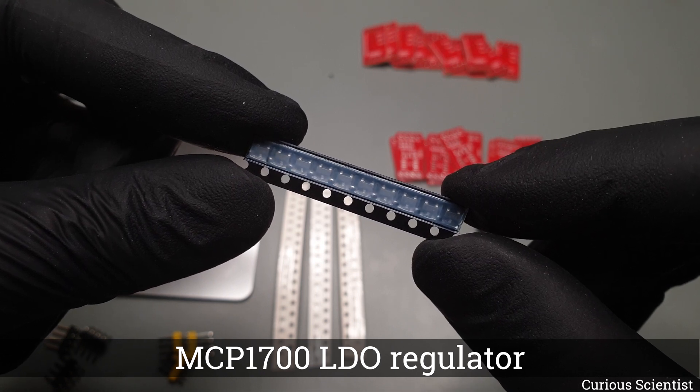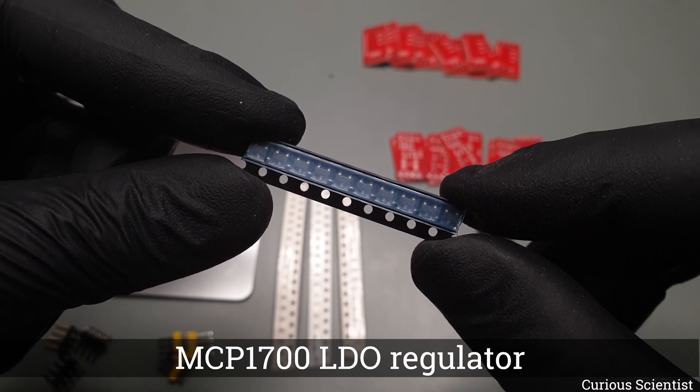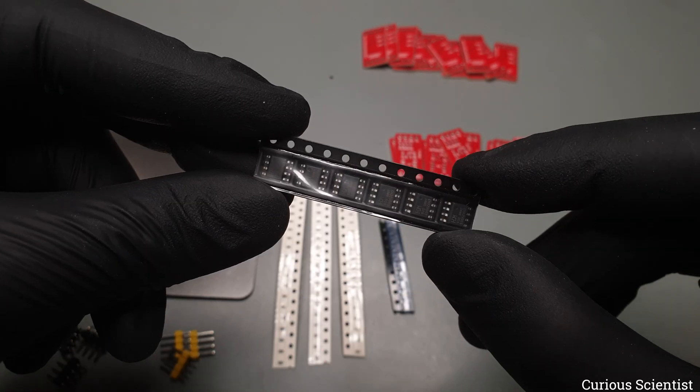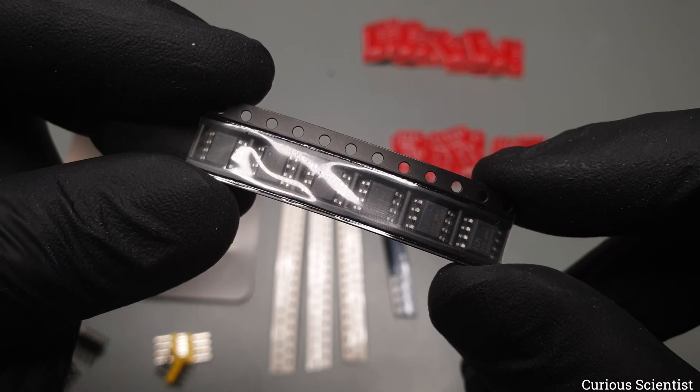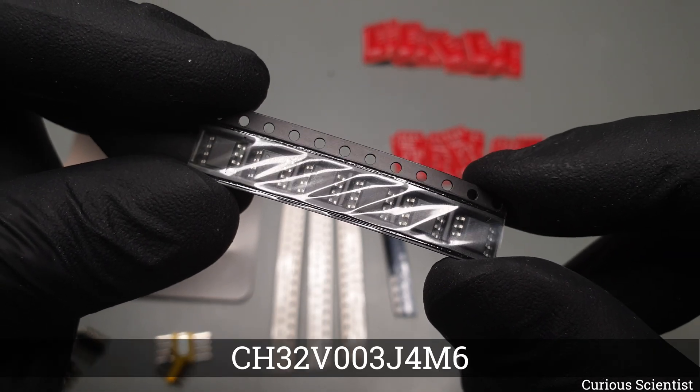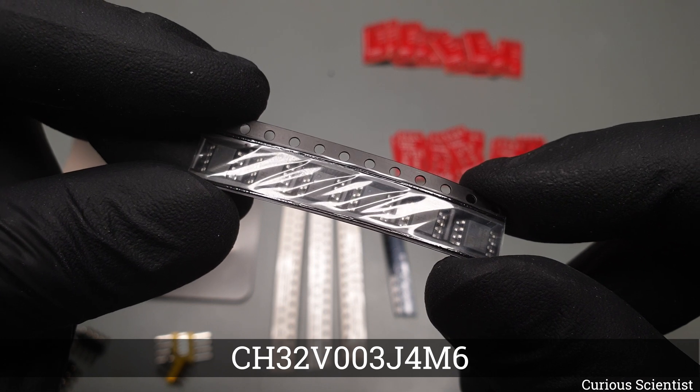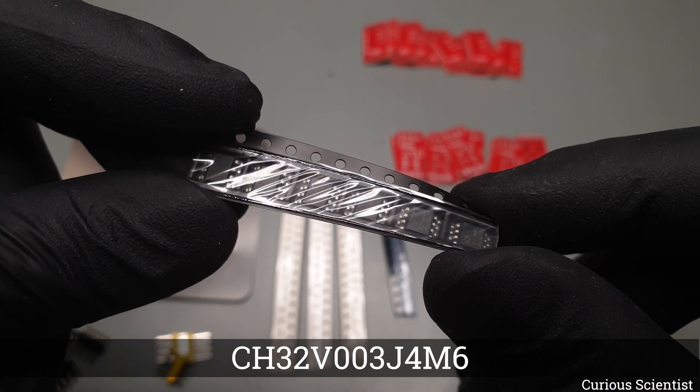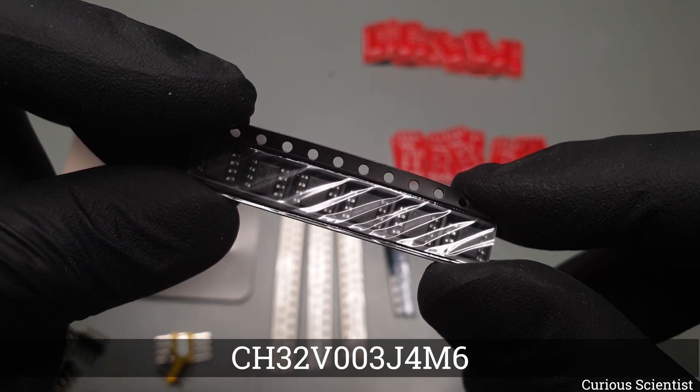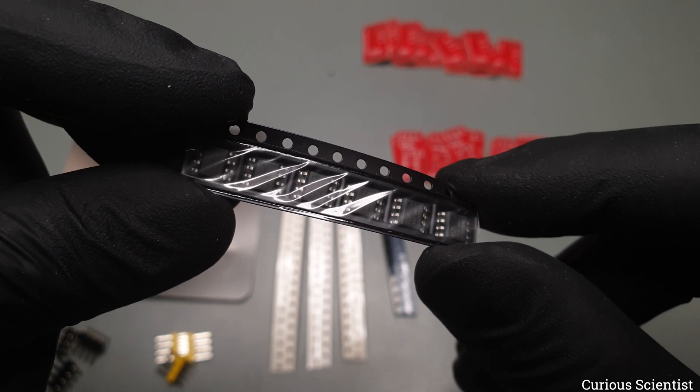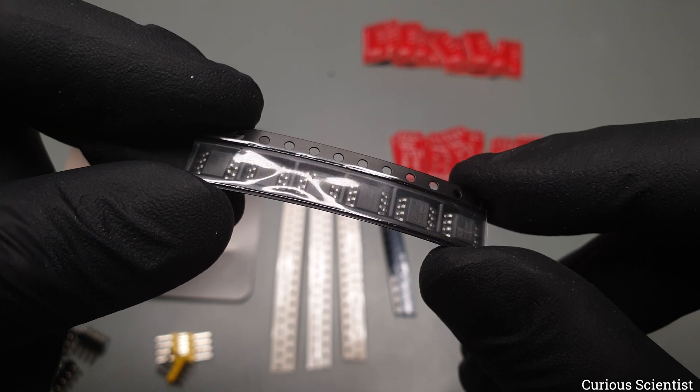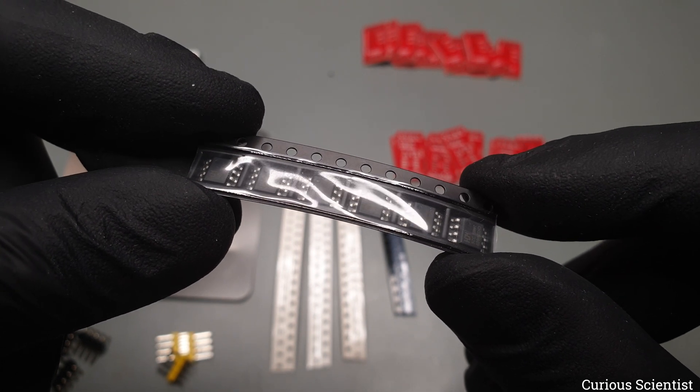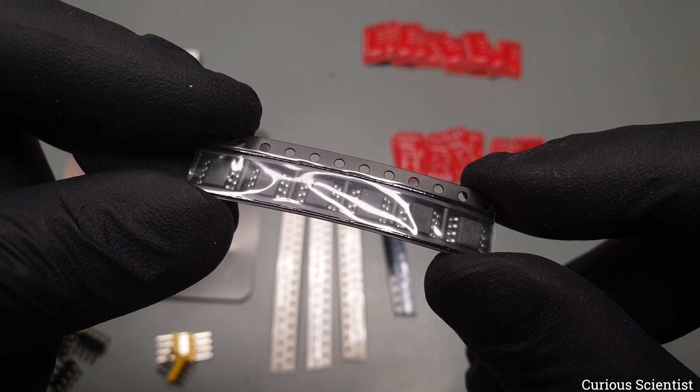The microcontroller that takes care of the measurements and drives the display is a CH32V003J4M6 microcontroller. It is a tiny 8-pin microcontroller, and it can be regarded as a better alternative for an ATtiny85 if you know how to program it.